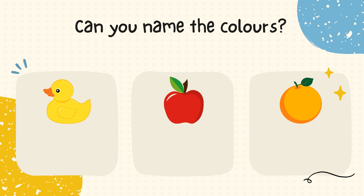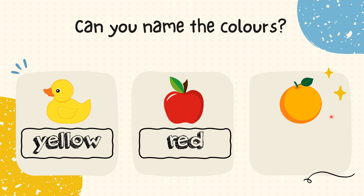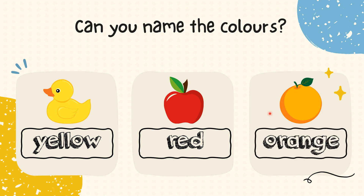Now let's look at the fourth picture — it's a duck. Do you know what colour is the duck? Yes, it is yellow. Look at the next picture — it's an apple. What colour is the apple? You are right, it is red. And the last picture — the fruit and the colour are the same, which is orange. Great job, everyone. You're getting it right.